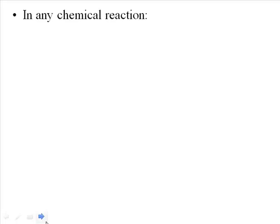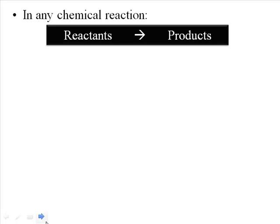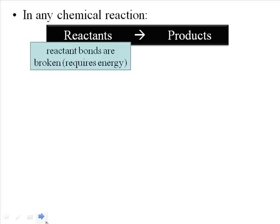In all chemical reactions, we know that we start with reactants and we end with products. We might have one, two, or three reactants, maybe even more, and the same thing with the products. The fact is all of those reactants are going to be broken apart into atoms, which then get rearranged and put together differently in the products. So whenever you start a chemical reaction, the first piece of energy required is the energy needed to break apart all the atoms in the reactants.